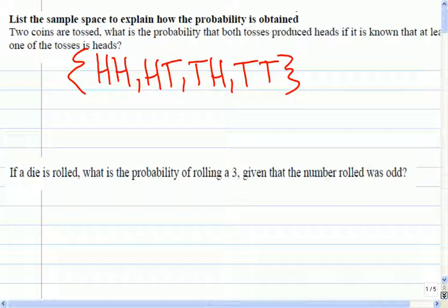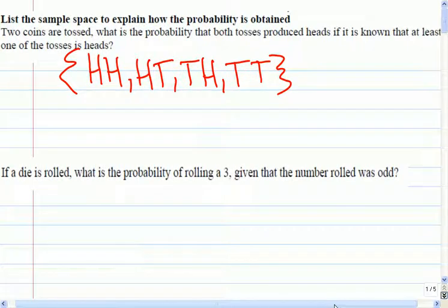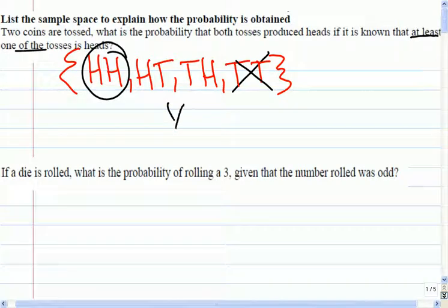What didn't happen in this experiment? Two tails did not happen because it tells me at least one of them, it is known that at least one of the tosses is a head. So we know that this was not part of the original experiment, and there are only three possibilities based on the information I have, one of which is two heads. So there is a one in three probability that both are heads.